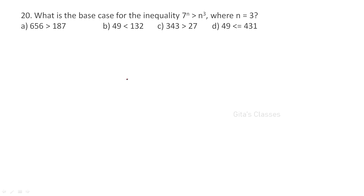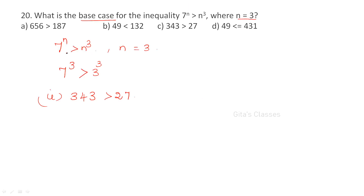Next, the base case for the inequality 7ⁿ > n³ where n = 3. Base case means the basis of induction — the minimum value. Sometimes it starts at S(0) or S(1), but here it starts at n = 3. S(3): is 7³ > 3³? That is, is 343 > 27? Yes. So C (n = 3) is the answer.